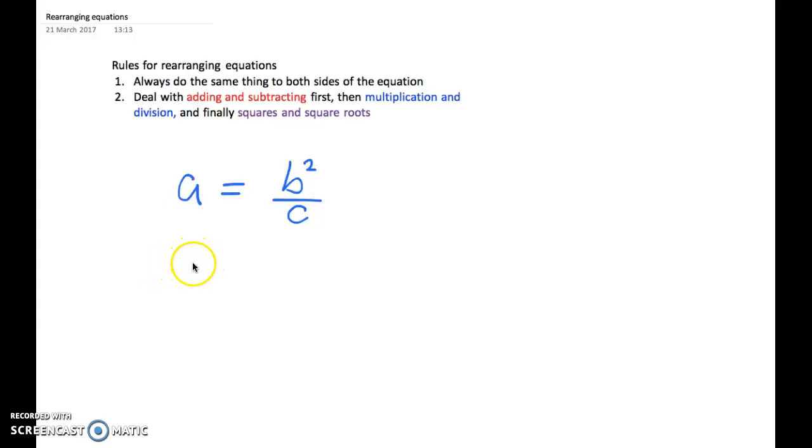Okay, in this example we're combining two things: we have a square and we have a division. Now by rule two, we need to deal with multiplication and division, so we deal with our division first followed by the square.